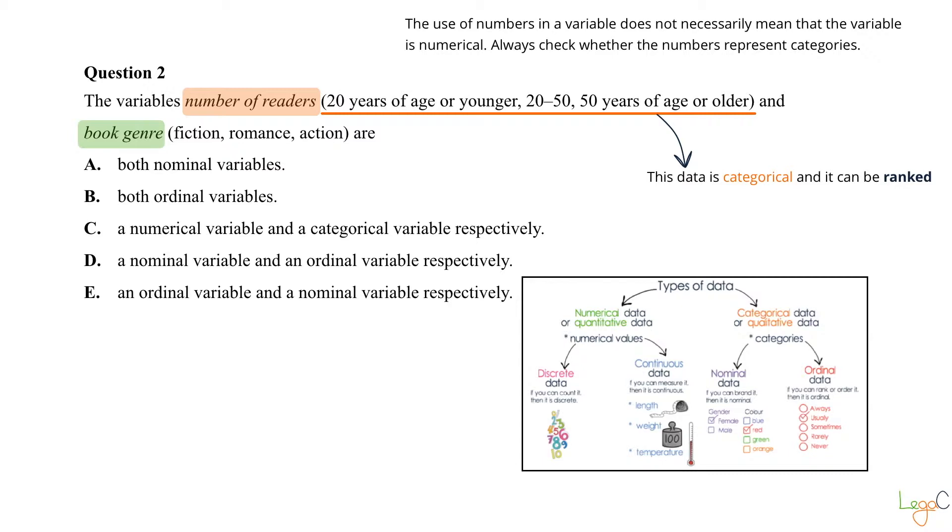So this data is categorical and it can be ranked, so it's a categorical ordinal variable. So the first variable is a categorical ordinal variable. For this reason, we can cross out option A and we can also cross out option C because of the word respectively. So the first variable should be categorical for the answer to be correct. Option D can also be crossed out because the first variable should be categorical ordinal.